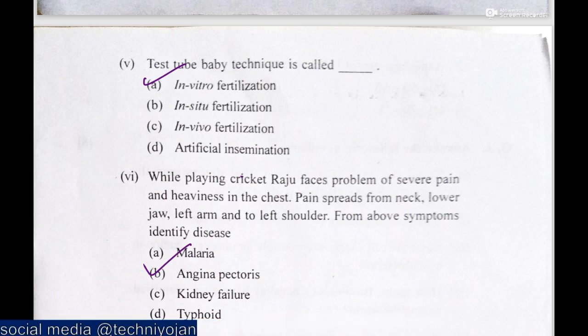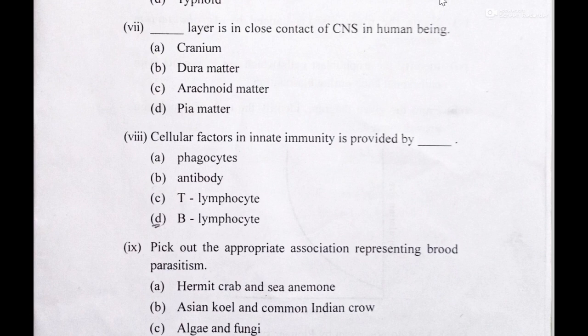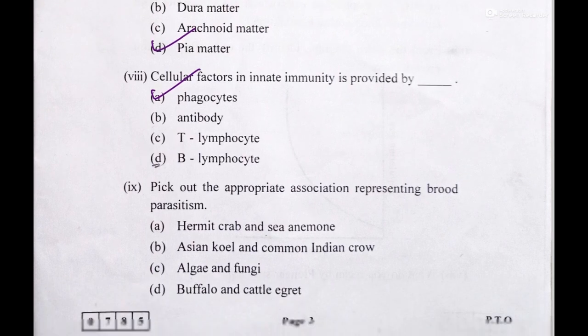The seventh MCQ: which layer is in close contact with the CNS in human beings? Its answer is pia mater. The eighth MCQ: cellular factors in innate immunity are provided by phagocytes.